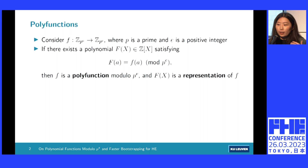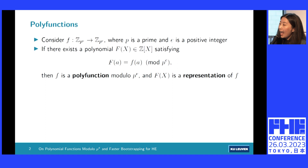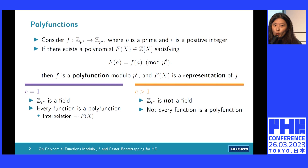Polyfunctions, by definition, are polynomial mappings modulo p to the power of e. This polynomial is called a representation of the polyfunction. We use uppercase letters for the representation — the polynomial — and lowercase letters for the function it induces. When e equals 1, in this special case, every function over a field is a polyfunction, and the representation can be easily obtained via the interpolation method. In general, however, this does not necessarily hold, which makes this problem more interesting.